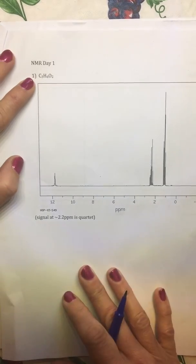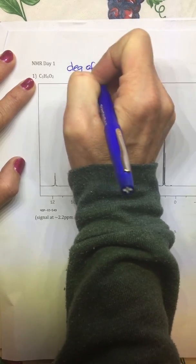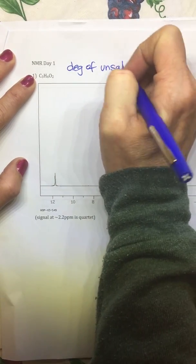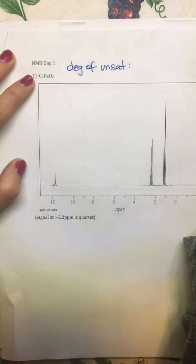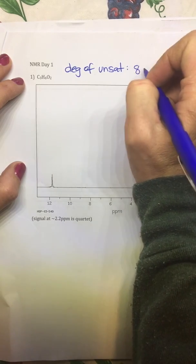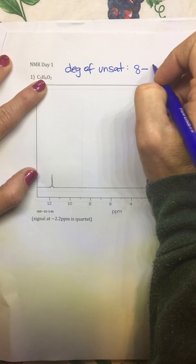And an alkane has 2n plus 2 hydrogens. So if we calculate our degrees of unsaturation, an alkane would have - so two times three is six plus two, we'd have eight hydrogens - minus how many hydrogens we have in our formula, which is six, and then we divide that by two.